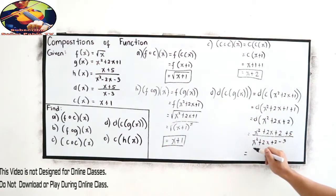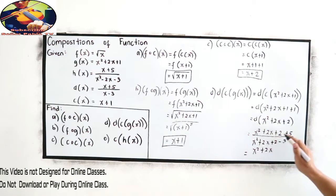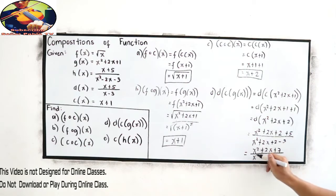So, we have x squared plus 2x. 2 plus 5. Positive 7. All over, x squared plus 2x. 2 minus 3. Negative 1.